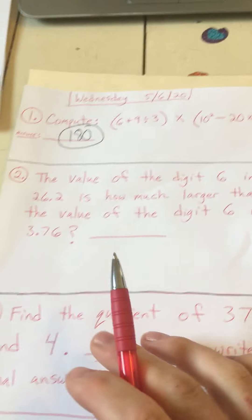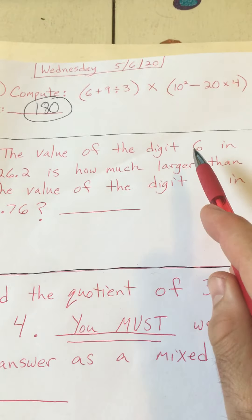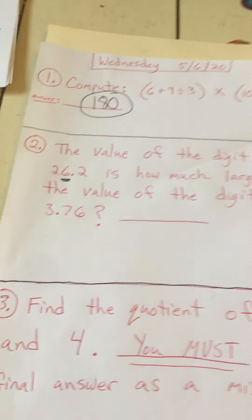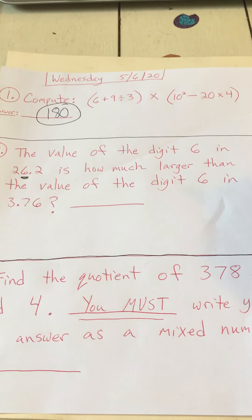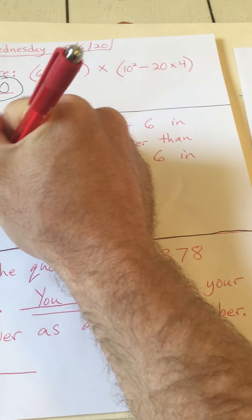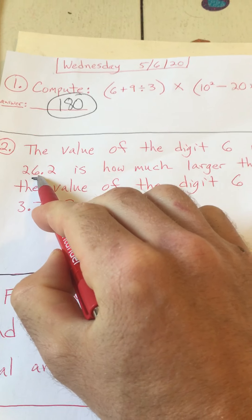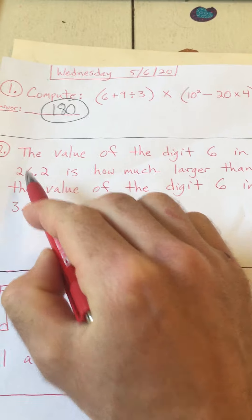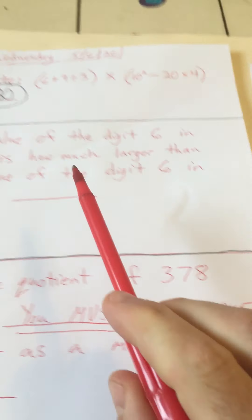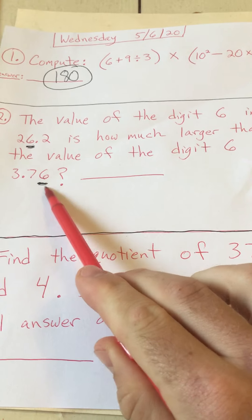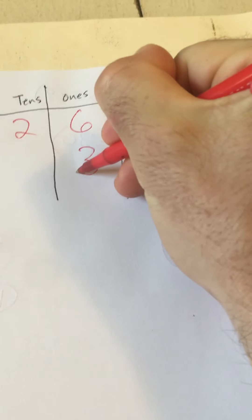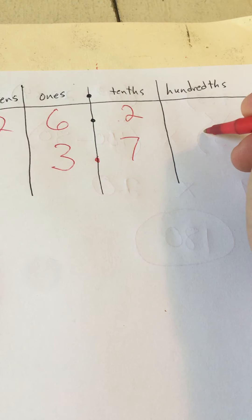Let's get ready for number 2. We've done a lot of these. So let's keep practicing. I made a little place value chart here to help me with this problem. It says the value of the digit 6 in 26.2 is how much larger than the value of the digit 6 in 3.76? So we're trying to find out this 6 is how much larger or how many times bigger than this 6. So let's write 26.2. Two tens, six ones, and two tenths, 26.2. And we're going to compare that to the 6 in 3.76. So it's three ones, point, seven tenths, and six hundredths.